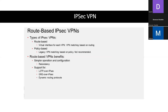Another benefit of route-based IPsec VPNs is that you can deploy variations such as L2TP over IPsec and GRE over IPsec tunneling. In addition, you can also enable dynamic routing protocols for scalability purposes and best path selection — BGP, OSPF, but typically BGP on the global internet.